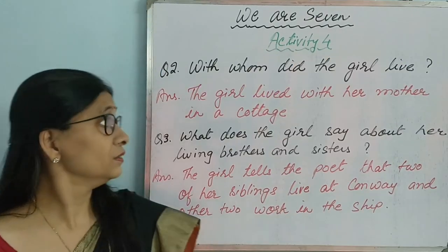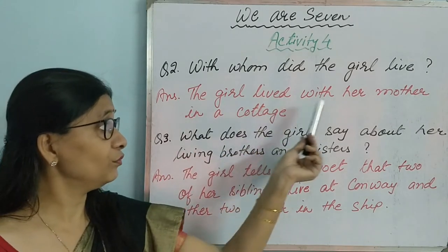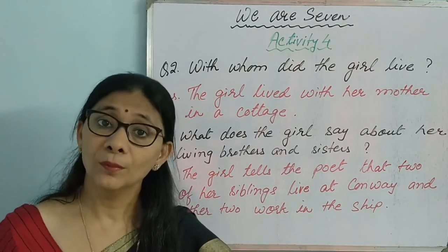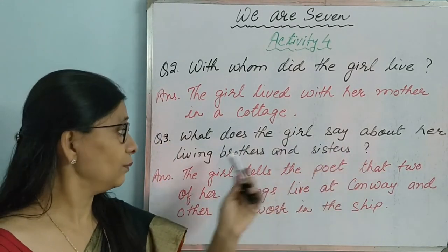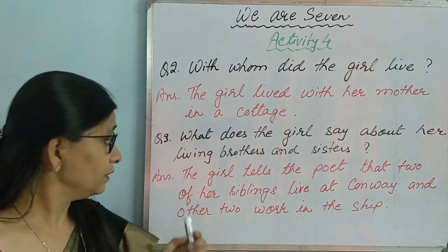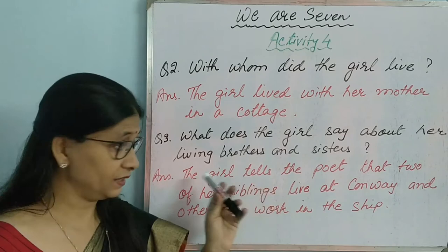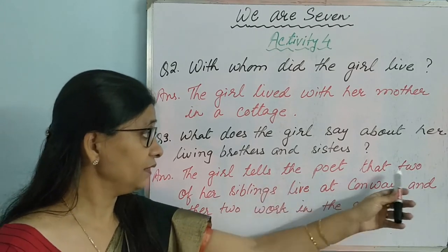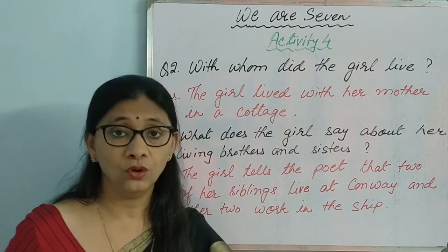Next question: The girl lived with her mother in a cottage. What does the girl say about her living brothers and sisters? The girl tells the poet that two of her siblings live at Conway and the other two have gone to the sea.